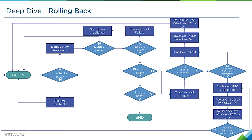Walking through this flowchart, we start at the beginning. The first thing that will happen will be the pre-checks. If they're successful, we'll have the deploy new appliance phase. If the deployment is successful, we'll move on to the export phase. If that's successful, we'll move on to the first boot phase, then onto the import phase, and we've finished.